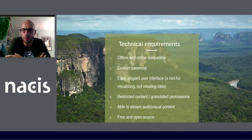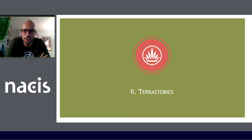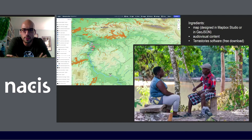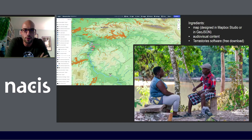Free and open source was really crucial to us as well, because we kept hearing similar kinds of needs from all over the world — in Canada, in Kenya, and different places. So out of that, Terra Stories was born. The way it works is you've got several ingredients: your map, which can be designed in Mapbox Studio or put into GeoJSON format; your audio-visual content; and then the Terra Stories download. You can combine these three to create an instance of Terra Stories spun up for a community.